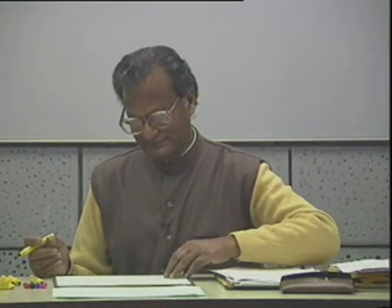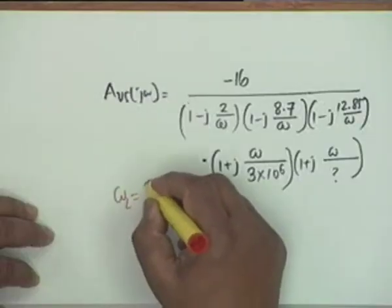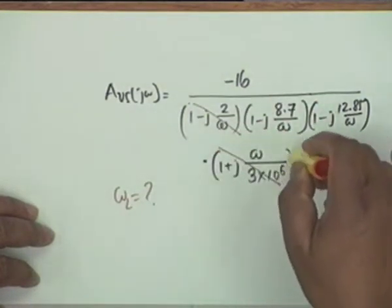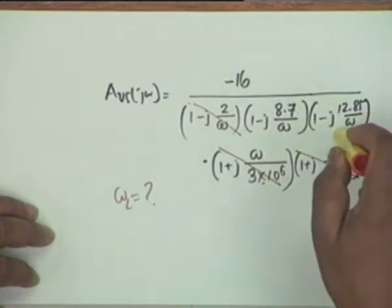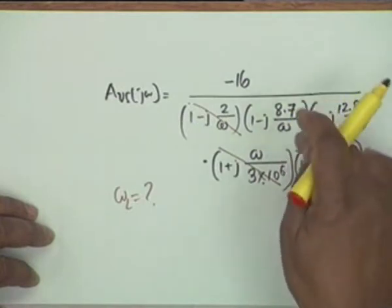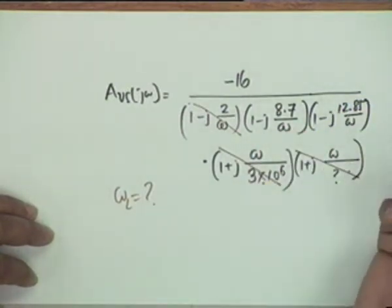To calculate the low frequency cut-off: you ignore the high frequency terms, then you have two dominant cut-off frequencies omega_L1 and omega_L2. You write the equation that the square of the magnitude of AVS equals 1/√2 of the mid-band value and solve for omega_L — exactly like question number 3 in the minor.